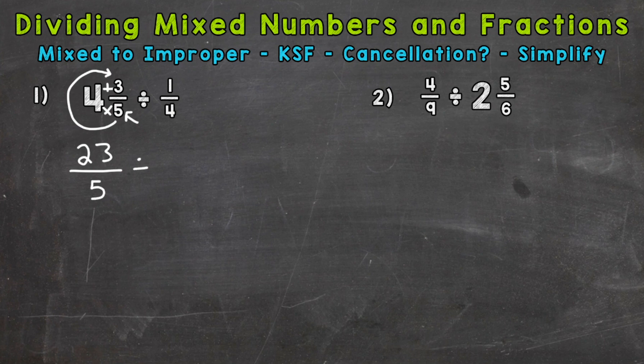Divided by, and we will keep one-fourth as is. It's already in fractional form. So we converted that mixed number to an improper fraction so we have a top and a bottom, a numerator and a denominator.